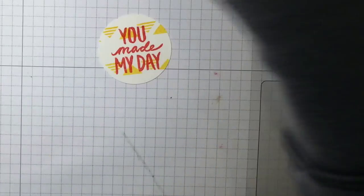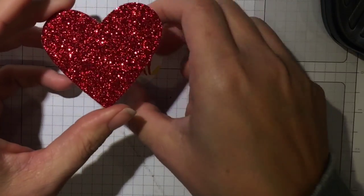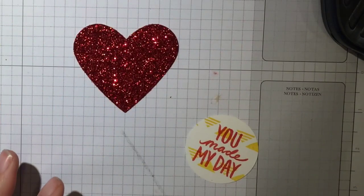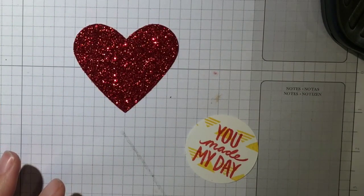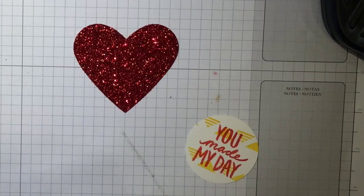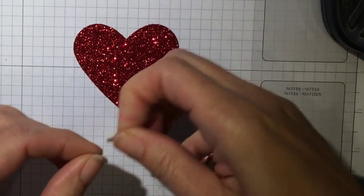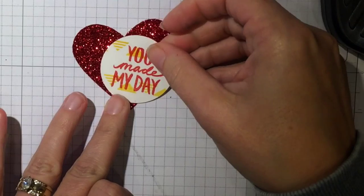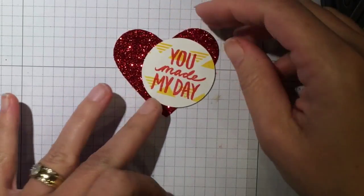Okay. Then you're going to use the third smallest heart framelit to cut out some of this red glimmer paper, which is so beautiful. And we're going to attach the, whoops, You Made My Day with a Stampin' Dimensional. And I kind of did it over to the side like that.